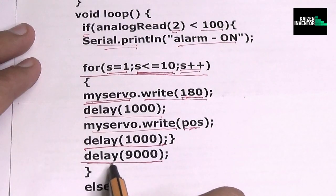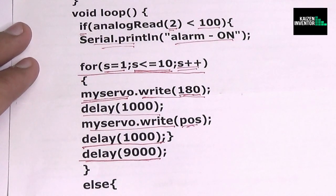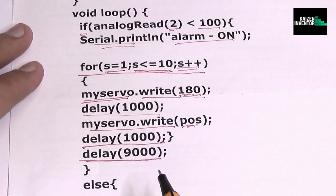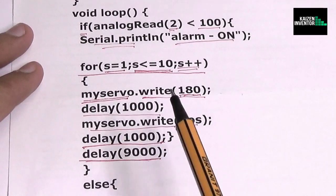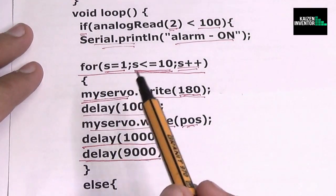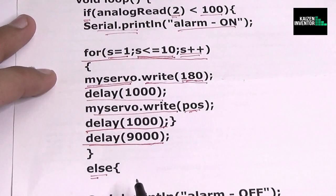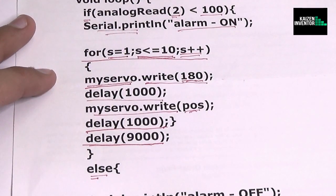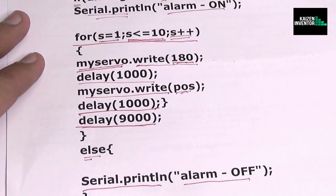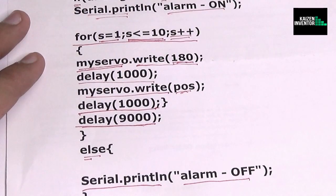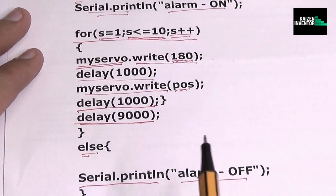Now after this cycle repeats 10 times we have a delay for nine seconds which means that the user of this instrument would get a nine second delay to turn the alarm off, otherwise it would again start to sprinkle the water. Now if this is not the case then simply just serial print that the alarm is off and that is basically all in the part of the code and it is very straightforward.